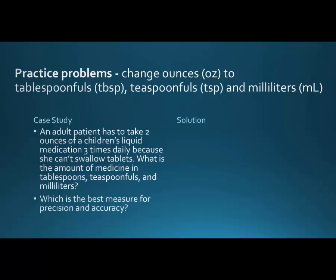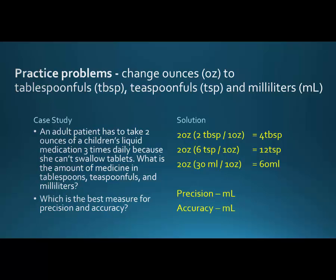Practice problem: change ounces to tablespoonfuls, teaspoons, and mLs. An adult patient has to take two ounces of a children's liquid medication three times daily because she can't swallow tablets. What is the amount of medicine in tablespoons, teaspoons, and milliliters? One ounce is two tablespoonfuls, so two ounces is four tablespoonfuls. Six teaspoons per ounce times two ounces makes 12 teaspoons. Two ounces times 30 mLs makes 60 mLs altogether.